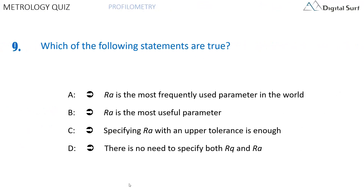Question number nine. Which of the following statements are true? Answer A: RA is the most frequently used parameter in the world. Answer B: RA is the most useful parameter. Answer C: specifying RA in an upper tolerance is enough. Answer D: there is no need to specify both RQ and RA. Multiple answers are allowed.